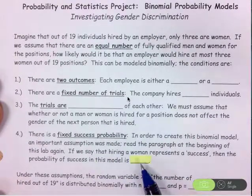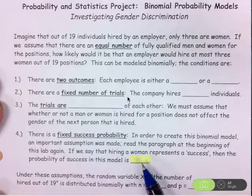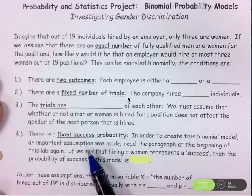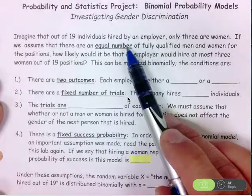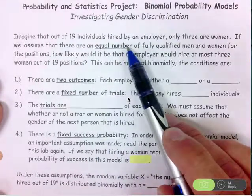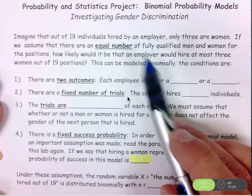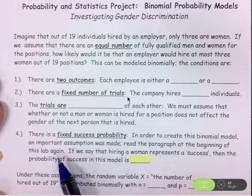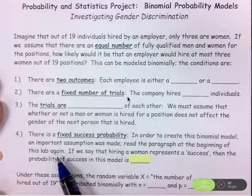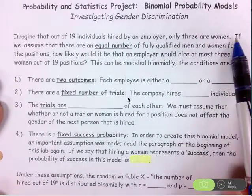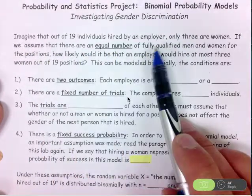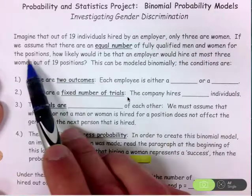So this success probability here is very important. An important assumption was made up here at the very beginning. Actually this entire model hinges on this assumption, so you need to make sure you've read the paragraph at the beginning very carefully. So what this says is if we assume that there are an equal number of fully qualified men and women for the positions.